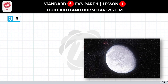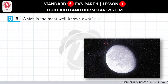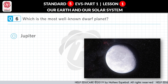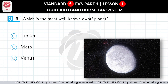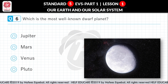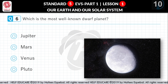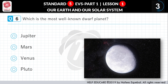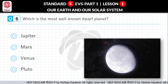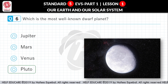Question No. 6: Which is the most well known dwarf planet? First option: Jupiter. Second option: Mars. Third option: Venus. Fourth option: Pluto. Correct answer is Pluto.